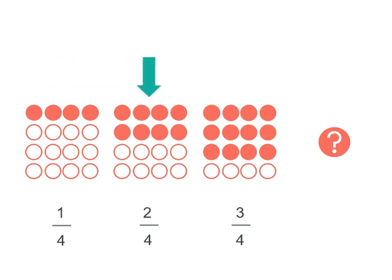Then we go to 2 out of 4. So we've got 2 on the top of our fraction out of 4. 4 is our common denominator, because all these pictures have 4 rows of 4.